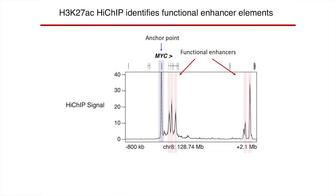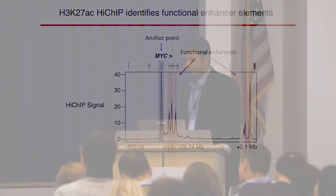Let's look at some primary data. This is Hi-ChIP in K562 leukemia cells, focusing on one gene, MYC, and in particular its promoter. We set the anchor point as the MYC promoter and walk down the genome asking which areas interact with it. We find five peaks: three relatively close by within 200 kilobases, and two about two megabases away that skip over two intervening genes to touch the MYC promoter. We then want to ask whether we're actually identifying functional enhancers or just noise.